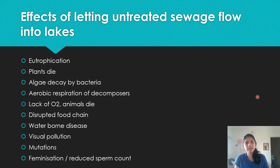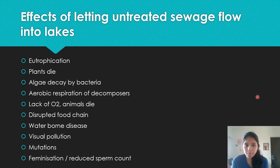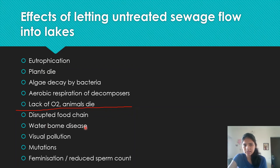Effects of letting untreated sewage flow into lakes: essentially the same eutrophication process — plants die, algae decay by bacteria via aerobic respiration causing a lack of dissolved oxygen, other marine animals die, disrupting the food chain. Separately, waterborne diseases can occur, visual pollution results, and mutations and feminization can cause reduced sperm counts and an imbalance in population.